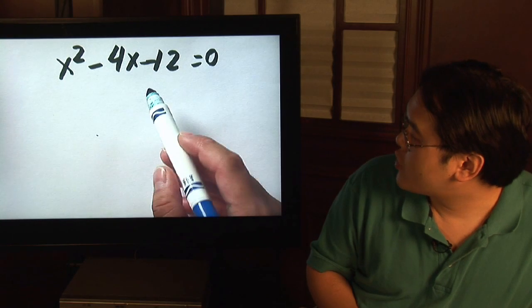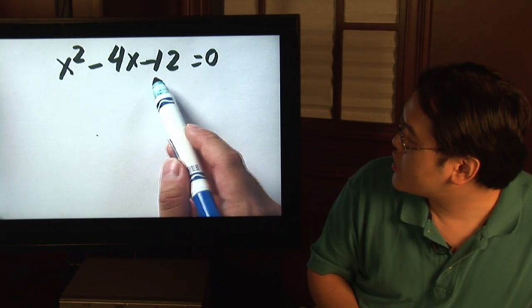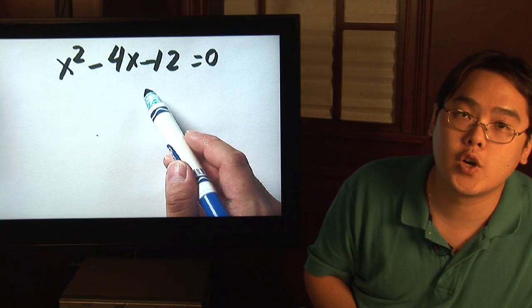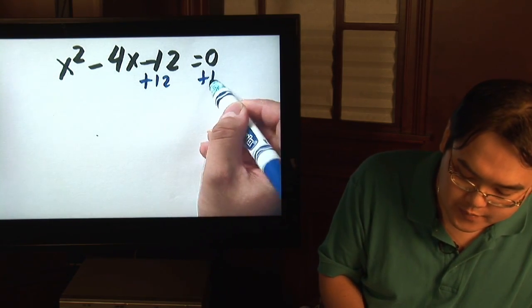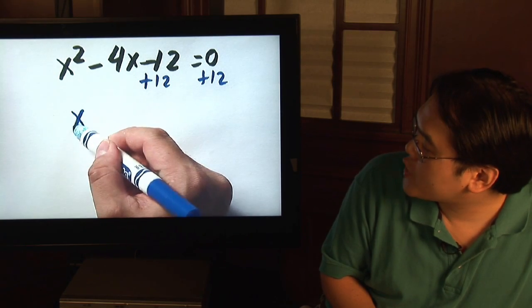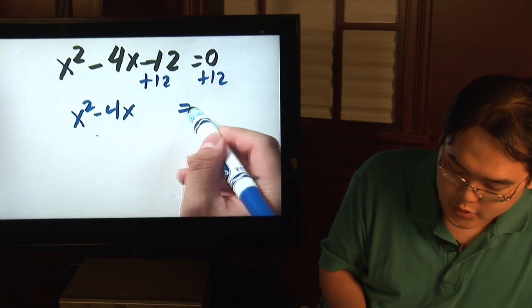The other thing you want to be sure of is that the constant term, this last number, negative 12, is moved over to the other side. So to move it over, you add 12. So what you have here is x squared minus 4x is equal to 12.